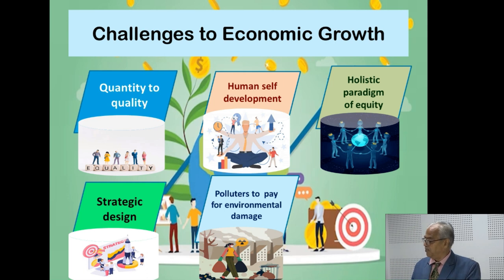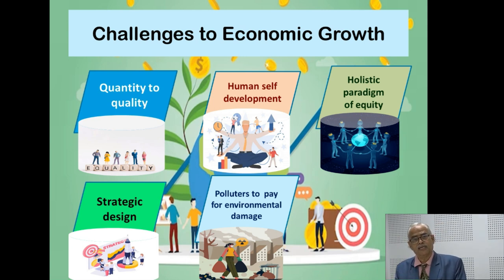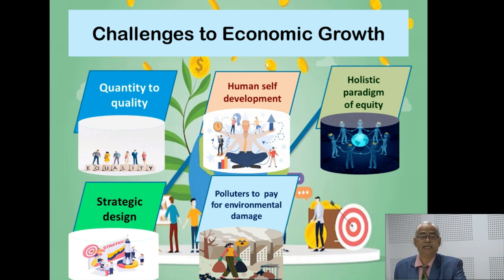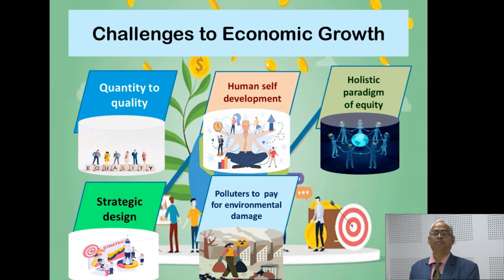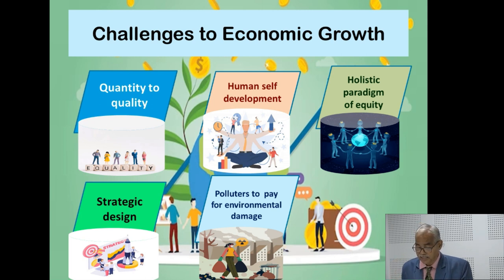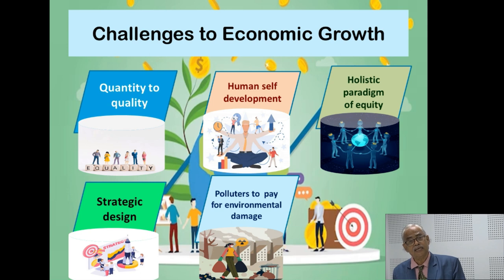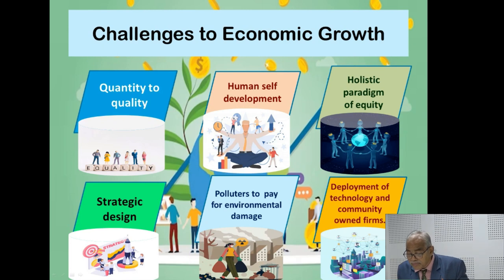The polluters must pay for environmental damage. Developed countries exploit resources, create pollutants, and must repay for countries whose resources they have utilized — their consumption is at the cost of others. Environmental damages caused by developed countries must be compensated, and support must be provided to developing countries. But developed nations go back on their words at international forums, do not pay, and there are no appropriate rules determining who pays how much.